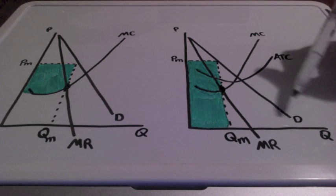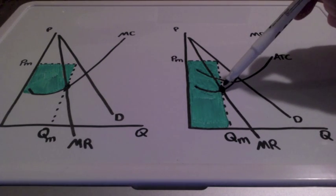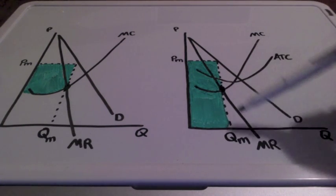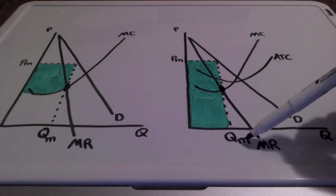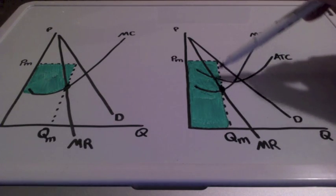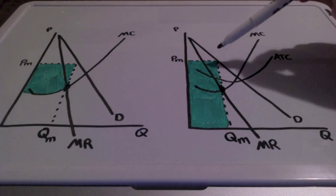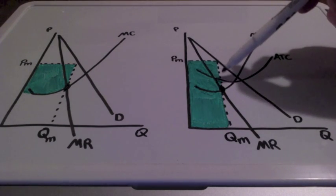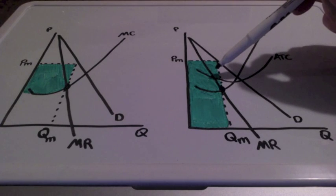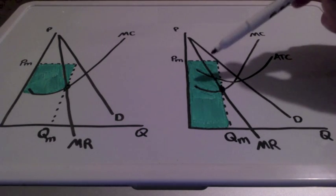We once again find the intersection where marginal revenue equals marginal cost. We bring this all the way down, this represents our profit maximizing quantity, and all the way up to demand, which represents our price. Because our price is well above average total cost, this firm is experiencing profits.